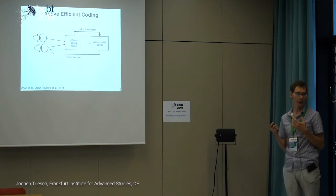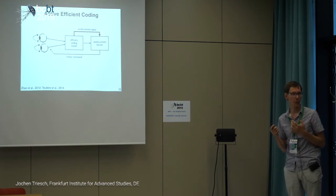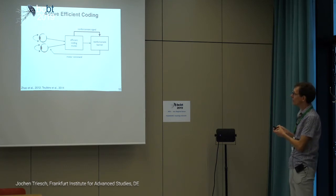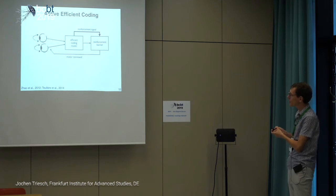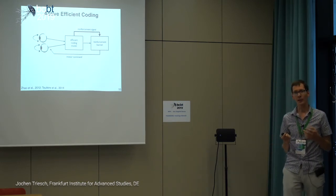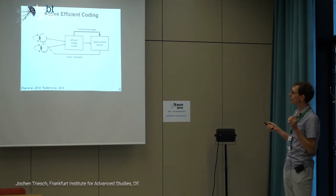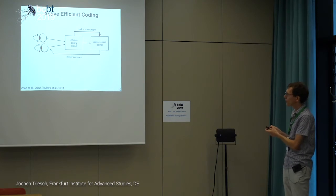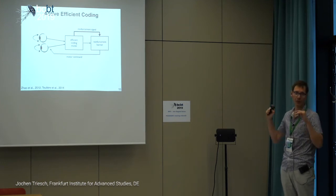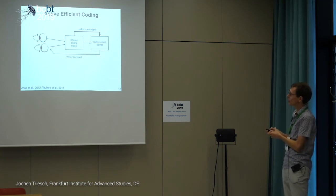A reinforcement learner generates motor commands — in particular, how to move the eyes. The interesting innovation is the reinforcement signal. What we've postulated is that the brain should be using a reinforcement signal that rewards efficient coding of the input, and this theoretically predicted reinforcement signal should be generated by the system itself.